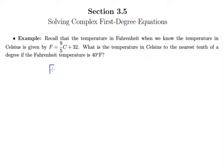Fahrenheit equals 9 fifths times the Celsius temperature plus 32. The question is what is the temperature in Celsius to the nearest tenth of a degree if the Fahrenheit temperature is 40 degrees Fahrenheit?